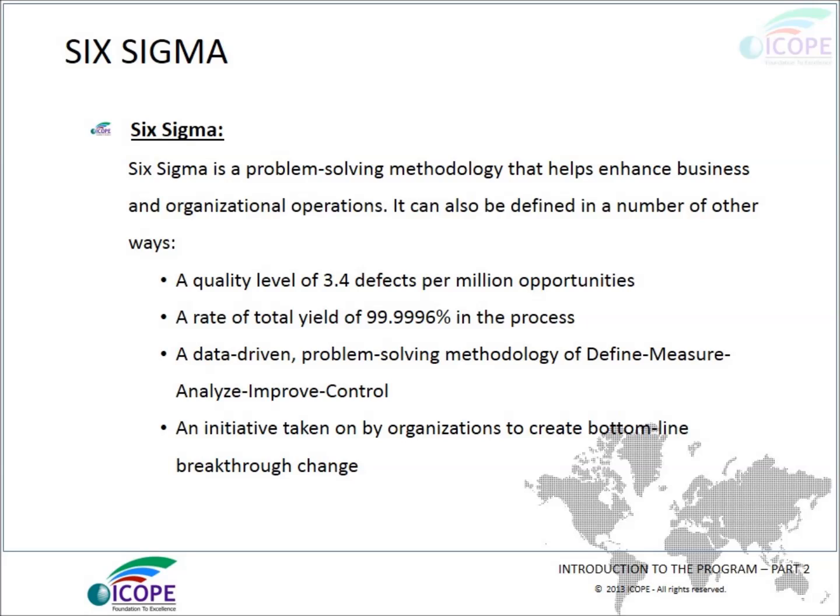Six Sigma can be defined in a number of ways: as a quality level of 3.4 defects per million opportunities; a total yield rate of 99.9996% in the process; a data-driven problem-solving methodology of Define, Measure, Analyze, Improve, and Control; and an initiative taken by an organization to create a bottom-line breakthrough change.